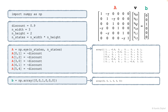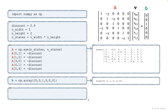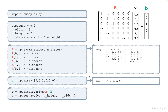And then we actually solve for the vector of unknowns, which are the value functions. We will use the linalg.solve function from NumPy to solve this — we just pass these arrays. And the last thing I'm doing here is reshaping that vector of unknowns to match the shape of our environment, because once computed with the linear algebra solver this is a one-dimensional array. So I'm just reshaping it so that it's easier to visualize the values of each state.